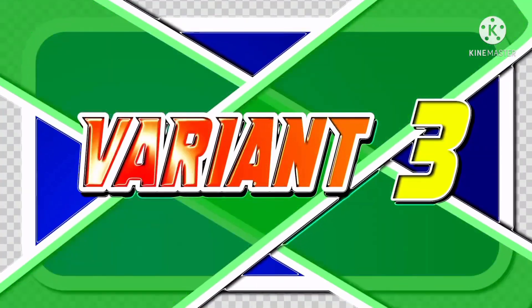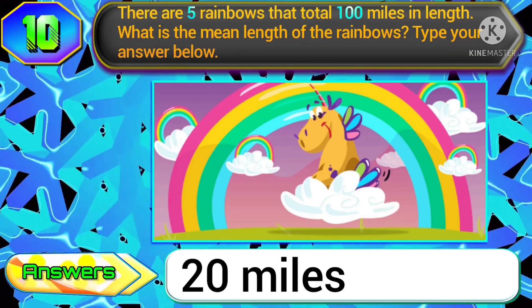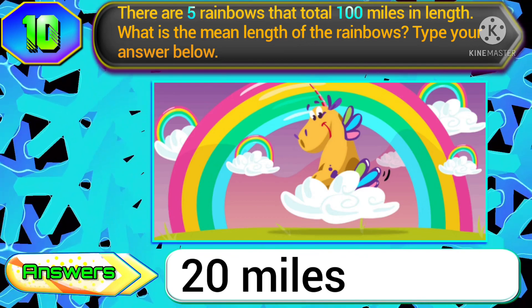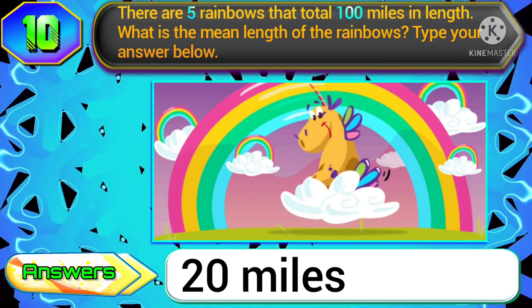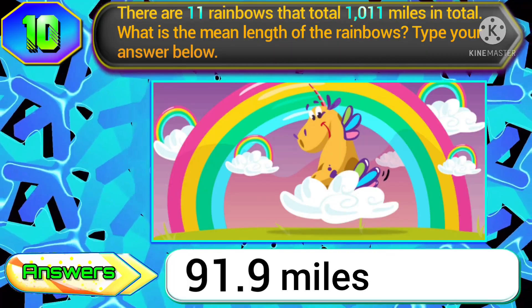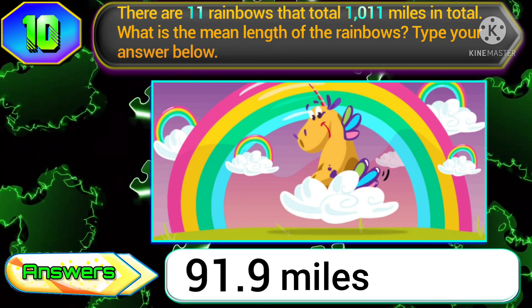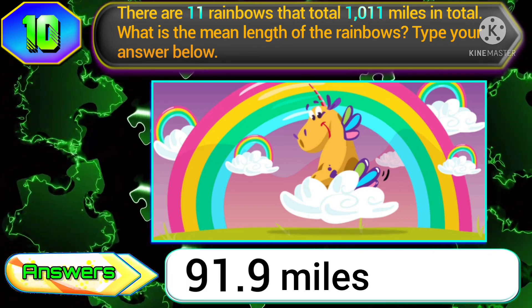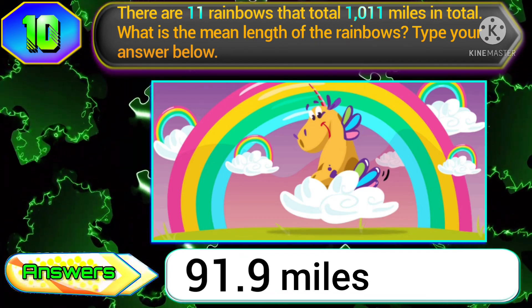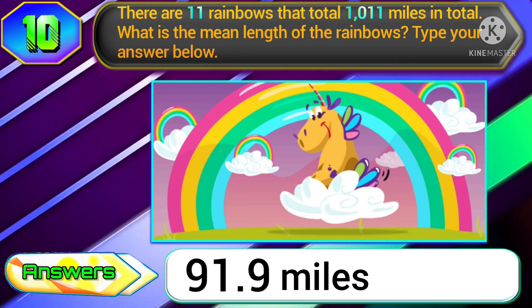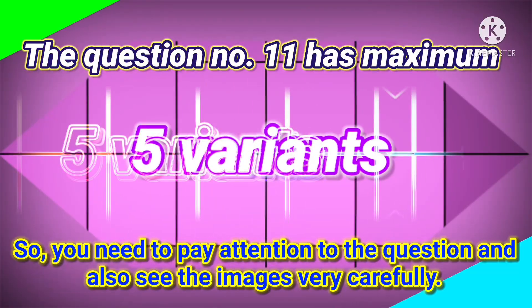In variant three, if the question is: there are five rainbows that are 100 miles in total length — what is the mean length? The answer will be 20 miles. In variant four, if the question is: there are 11 rainbows that are 1,011 miles in total — what is the mean length of the rainbows? The answer will be 91.9 miles.